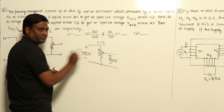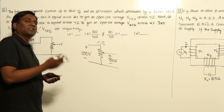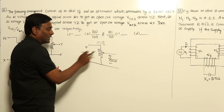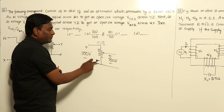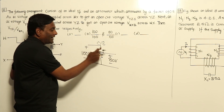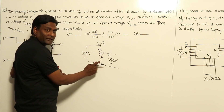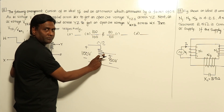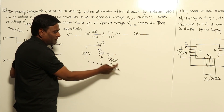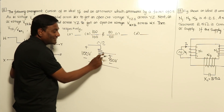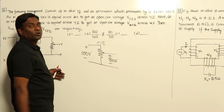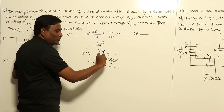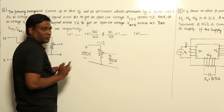For example, consider 100 ohms with 100 turns. If you supply 100 volts, 1 ampere of current will flow. At the 80th turn tap, the output voltage is 1 ampere into 80 ohms, which equals 80 volts.